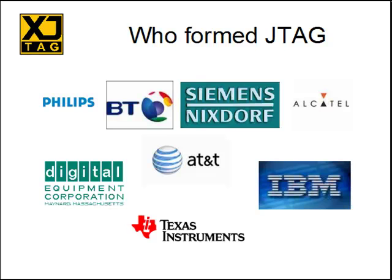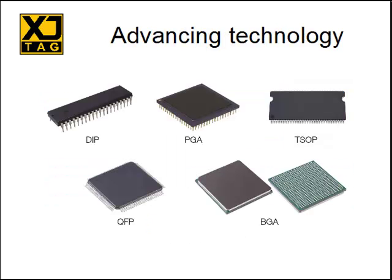The JTAG group was trying to come up with a new test methodology that could cope with modern circuit boards. The newer boards were utilizing technologies like surface mount and getting ever smaller. As boards got smaller and more dense, it became more and more difficult to apply test points. This made it very difficult for traditional in-circuit testing to do a good job of coverage.